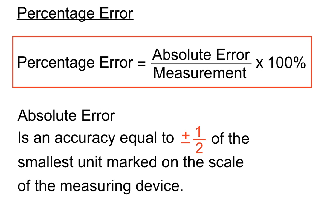To recap: percentage error is the absolute error on top over the measurement itself, multiplied by 100 to turn it into a percent. The absolute error is an accuracy equal to plus or minus half of the smallest unit marked on the scale of the measuring device — and as we saw in the last example, that smallest unit can also be the amount we're rounding each measurement to. I hope that helps. Have a look at the video again if you're not sure, and thanks for listening. See you next time.